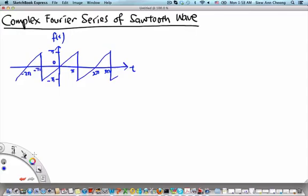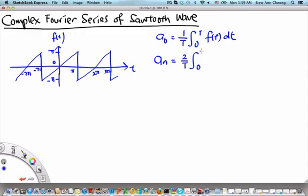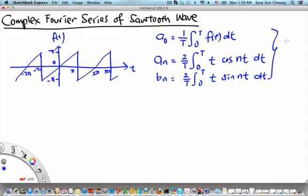Welcome to the MH2801 video segment on the complex Fourier series of a sawtooth wave. In the previous video segment, we have seen how the real Fourier series of a sawtooth wave, like the one shown below, can be computed by computing the real Fourier coefficients: a0 equals 1 over T integral from 0 to T of f(t) dt, the real coefficients a_n equals 2 over T integral from 0 to T of t cosine(nt) dt, and b_n equals 2 over T integral from 0 to T of t sine(nt) dt. These are the real Fourier series coefficients.